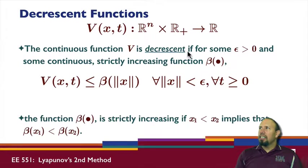A continuous function is decrescent if for some epsilon greater than zero and some continuous strictly increasing function beta, V of x and t is less than or equal to that beta strictly increasing function of the norm of x, for all norms of x less than epsilon and for all time greater than or equal to zero.